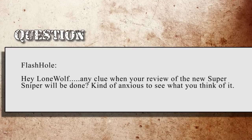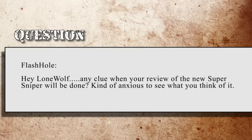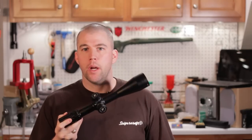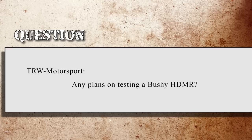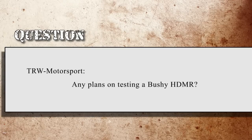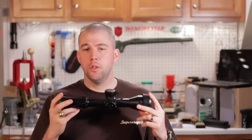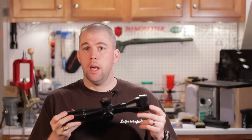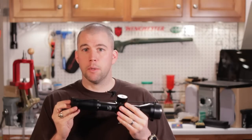Flashhole on AR15.com asks when the Super Sniper review will be done. We have a Super Sniper 5-25 power here — it's just waiting for time to get it on the rifle and give it a test. TRW Motorsport asks about the Bushnell HDMR — we also have that scope with a Tremor 2 reticle and are planning to get it to the range shortly. We've already spent time looking through it and will be commenting on glass clarity and other issues coming up on the internet, but it'll be a couple of weeks.